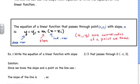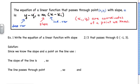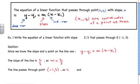In Example 1, we're asked to write the equation of a linear function with a slope equal to 2/3 that passes through point G with coordinates negative 1 and 3. Since we know the slope and a point on the line, we use the slope-point form. The slope m equals 2/3, x₁ equals negative 1, and y₁ equals 3, so we substitute those values into the equation.